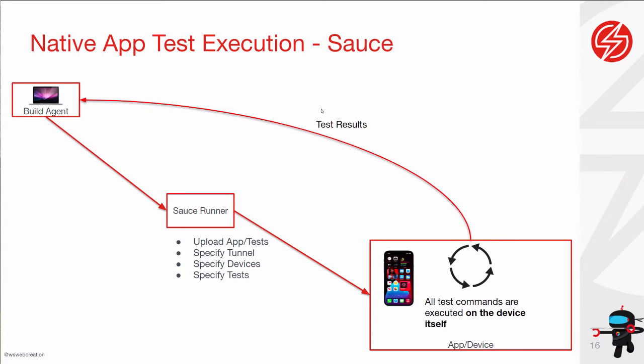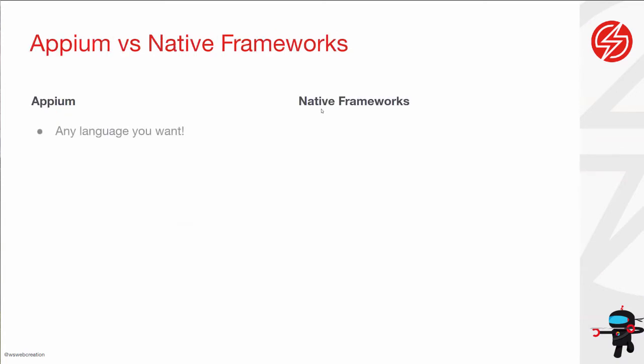It's a very different execution architecture. So given all of that, why would you ever choose Appium? The reason I'm focusing on the test execution differences is because that's the least understood part of this decision, in my opinion. People generally understand the other kinds of decisions they have to make, but without that critical piece of information I feel they don't have enough to make the right decision.